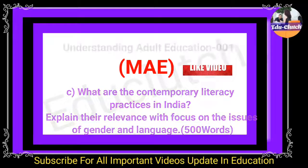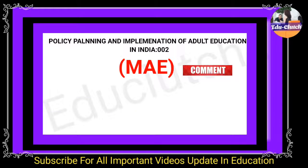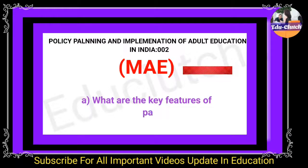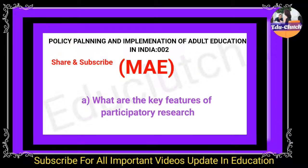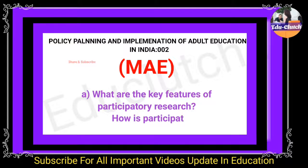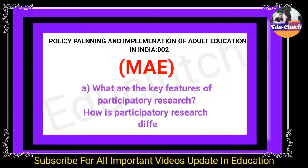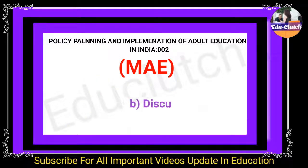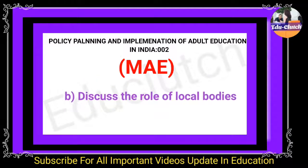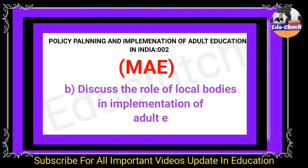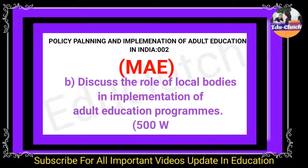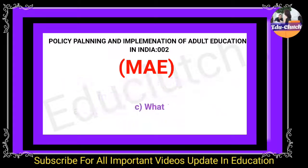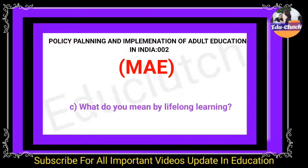Next is MAE 002, that is Policy Planning and Implementation of Adult Education in India. First assignment is what are the key features of participatory research, and how is participatory research different from conventional research? Second is discuss the role of local bodies in implementation of adult education programs.